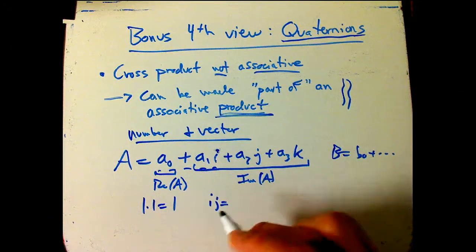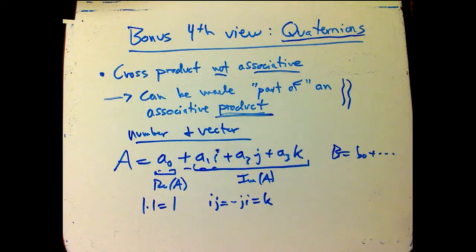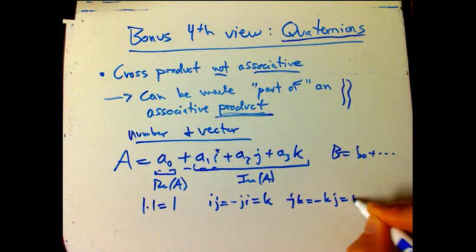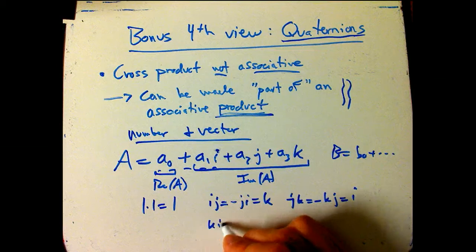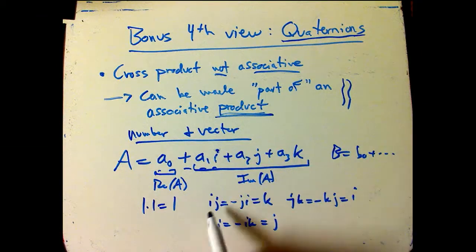i times j, that's where the cross product's going to come in. It's going to be minus j times i, which is k. j times k is going to be the same as minus k times j, is going to be i. And k times i, which is going to be minus i times k, is going to be j. Just basically the cross product. It's exactly as if you were taking the cross product of the basis vectors.